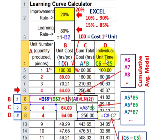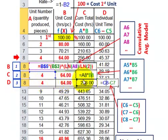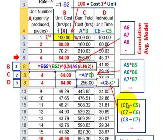The last column is D, for individual unit time. That's just equal sign C8 minus C7 for row 8 — the difference between the current and previous row. So it would be C6 minus C5, C7 minus C6, C8 minus C7 — just that indexing. That takes care of our learning curve for the cumulative average model.